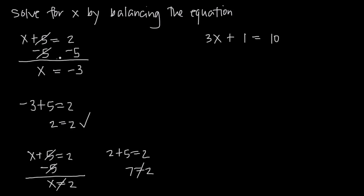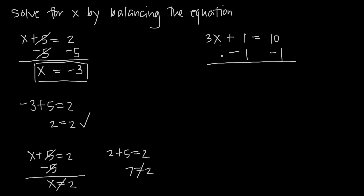So whatever you do to one side, you have to do to both in order to come up with the correct solution for the variable in our equation. Let's look at a problem that's slightly more complicated. We want to solve for x. The first thing we can do is subtract 1 from both sides — we have a positive 1 on the left. If we subtract 1 from both sides, we get rid of the positive 1 on the left hand side. We're left with 3x, plus 1 minus 1 cancels, and we get 10 minus 1 is just 9. So we have 3x is equal to 9.